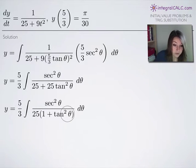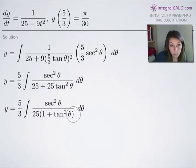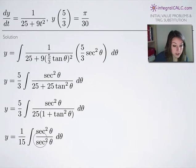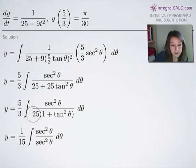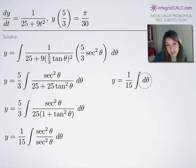In the next step, we factor out the 25 from the denominator, leaving 1 + tan²(θ). Using our identity 1 + tan²(θ) = sec²(θ), we substitute sec²(θ) in the denominator. Combining (5/3) × (1/25) gives 1/15 out front. The sec²(θ) in the numerator and denominator cancel, leaving us with (1/15) times the integral of dθ.